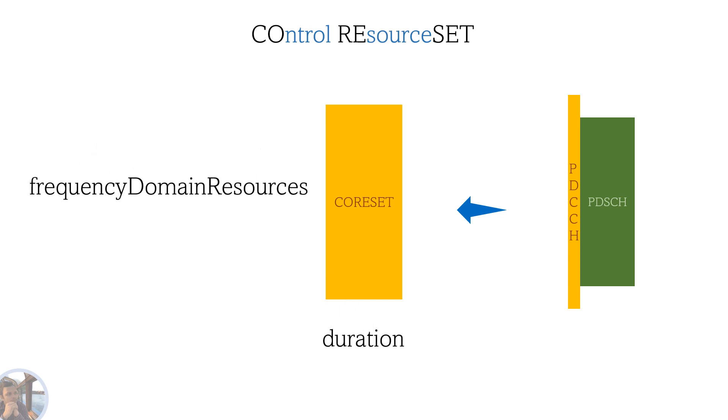Each CORESET has frequency domain resources and duration information elements. Each bit of frequency domain resources represents 6 resource blocks or 6 RBs, and the duration can be 1 to 3 symbols.